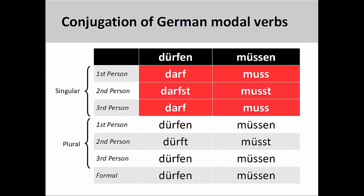Most singular forms of the modal verbs have a shift in the stem vowel. For example, as you see on the screen, the stem vowel in the modal verb dürfen changes from ü to a in the singular, but goes back to ü in the plural. The stem vowel in the modal verb müssen changes from ü to u in the singular, but goes back to ü in the plural.